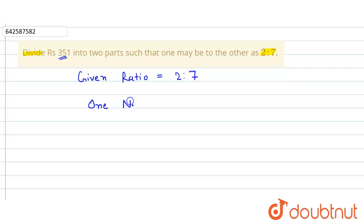So here the one number or the first number will be equals to two divided by two plus seven into three fifty one. Now we simply solve it.